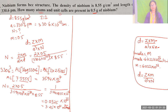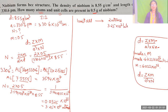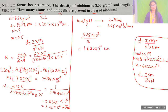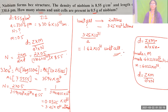Now for unit cells: since it is BCC, each unit cell has 2 atoms. We have 3.25 × 10²¹ atoms total, so number of unit cells = 3.25 × 10²¹ / 2 = 1.625 × 10²¹, approximately 1.62 × 10²¹ unit cells.